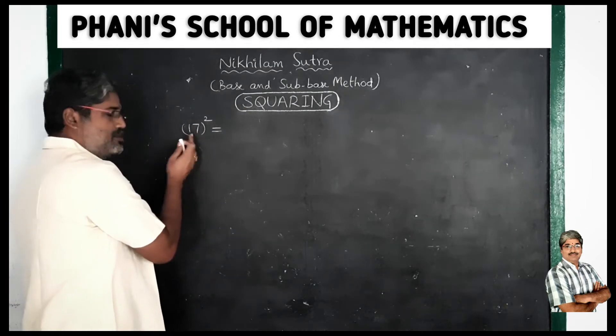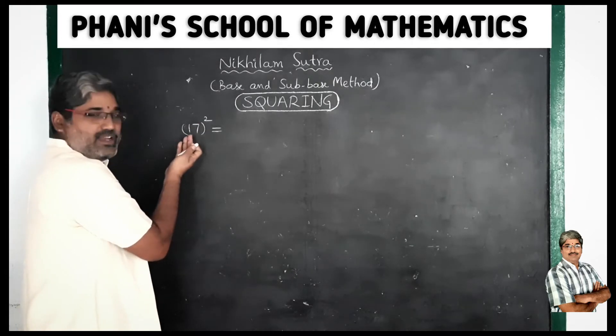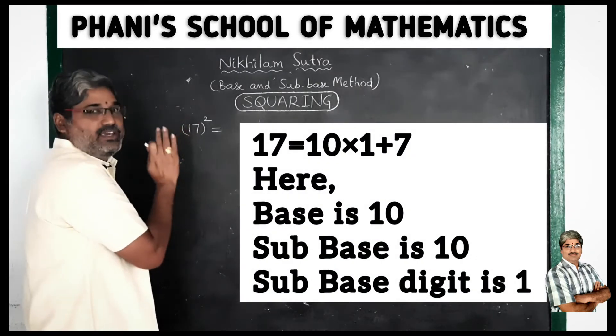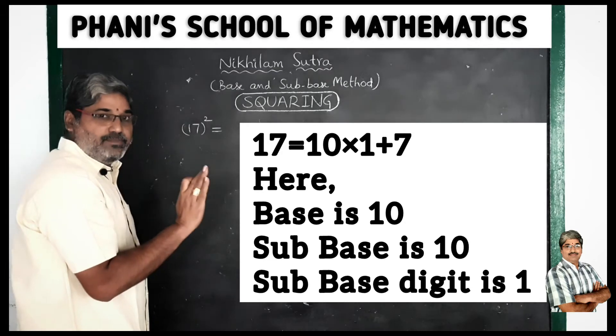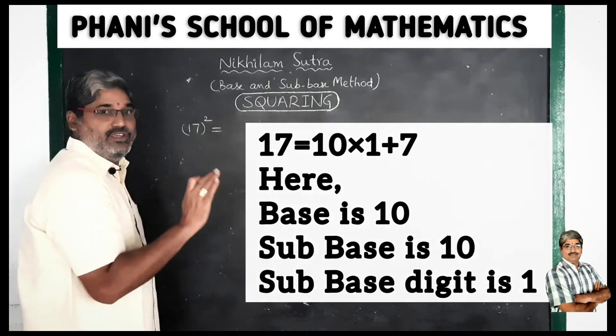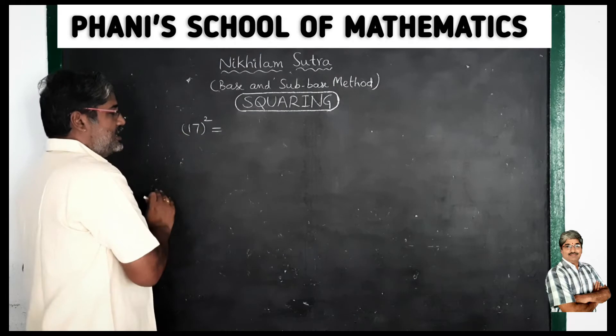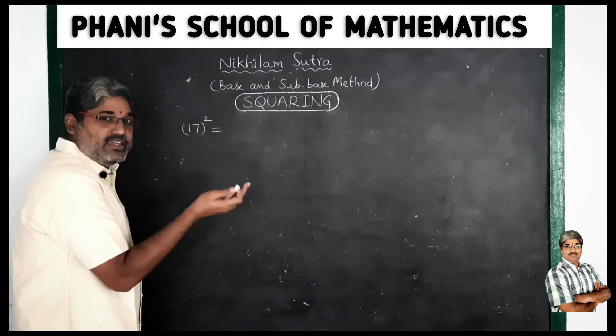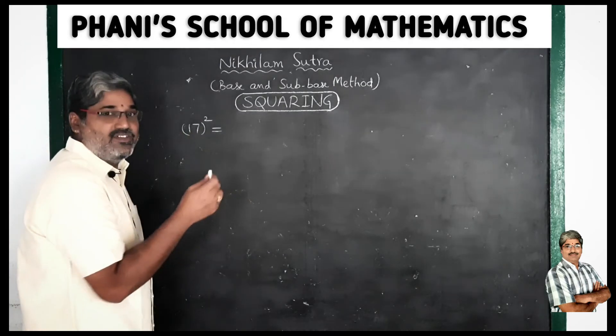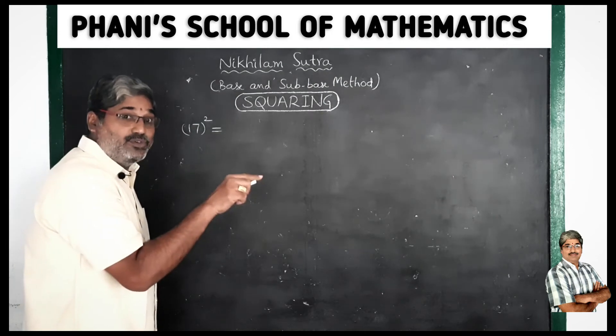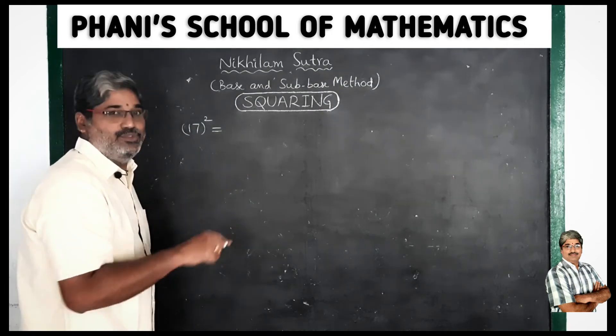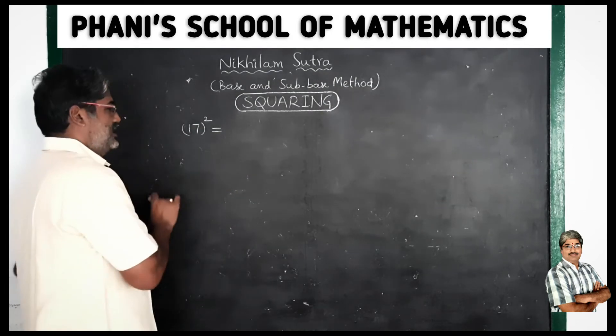Okay so first base method is sub-base method, I'll show you the base method. 17 square, we are clear. 10 plus 7 means 10 is the base, right. Base method is 10, 100, 1000, 1000 right. Now suppose 23 square, 10 base method but sub-base is 20. Clear, okay right.